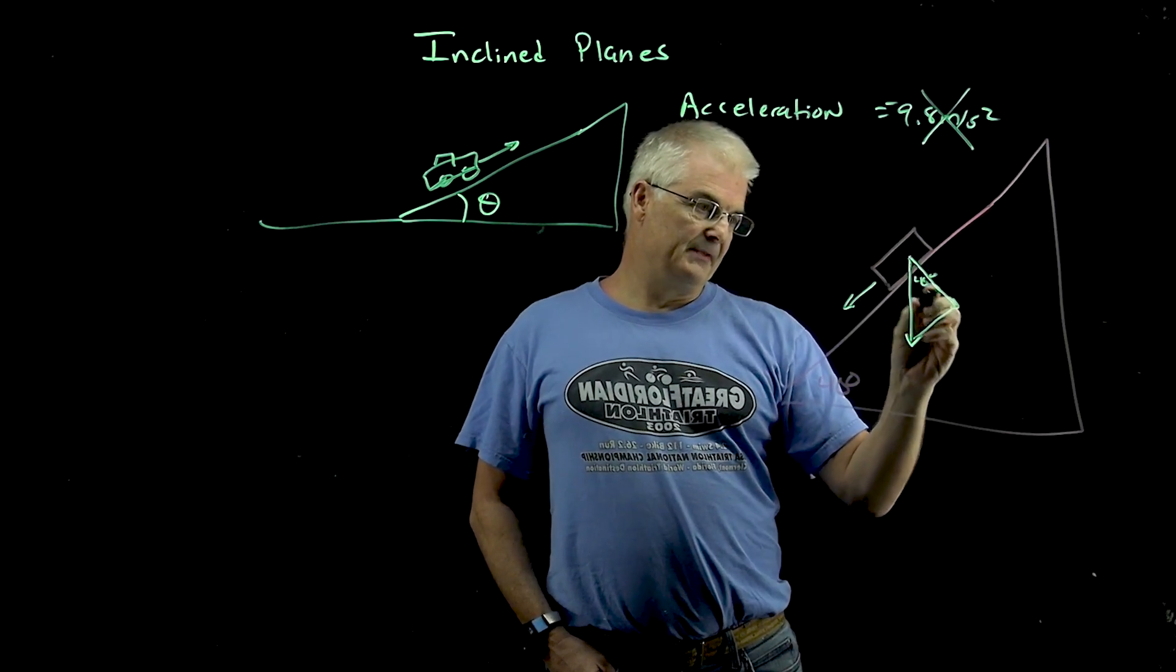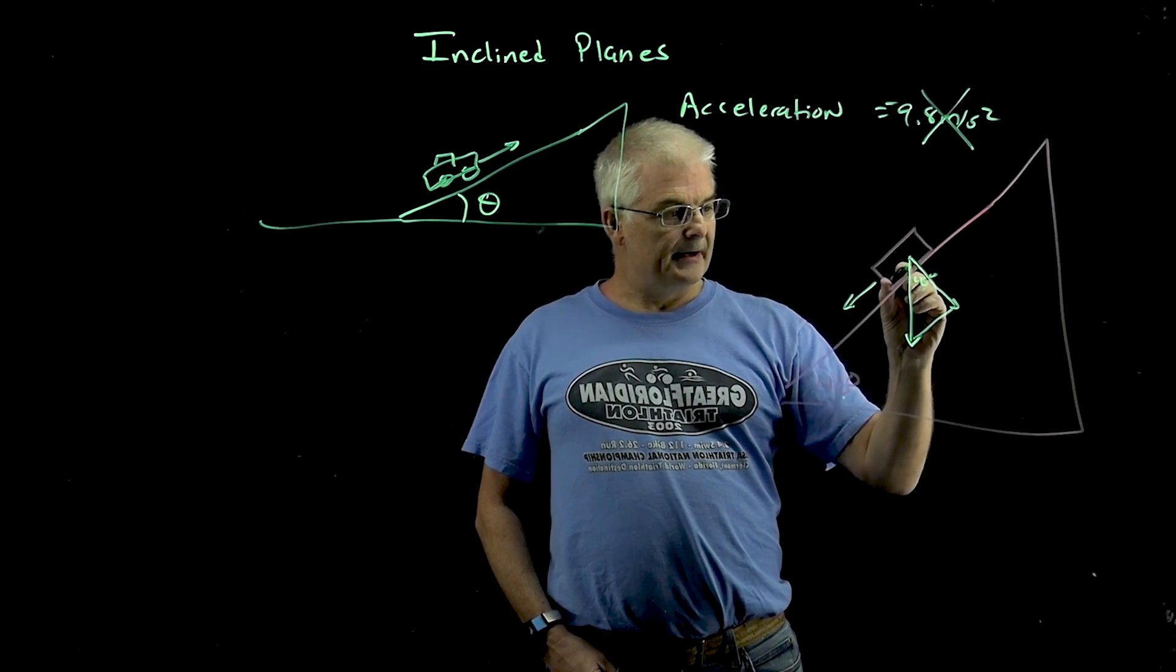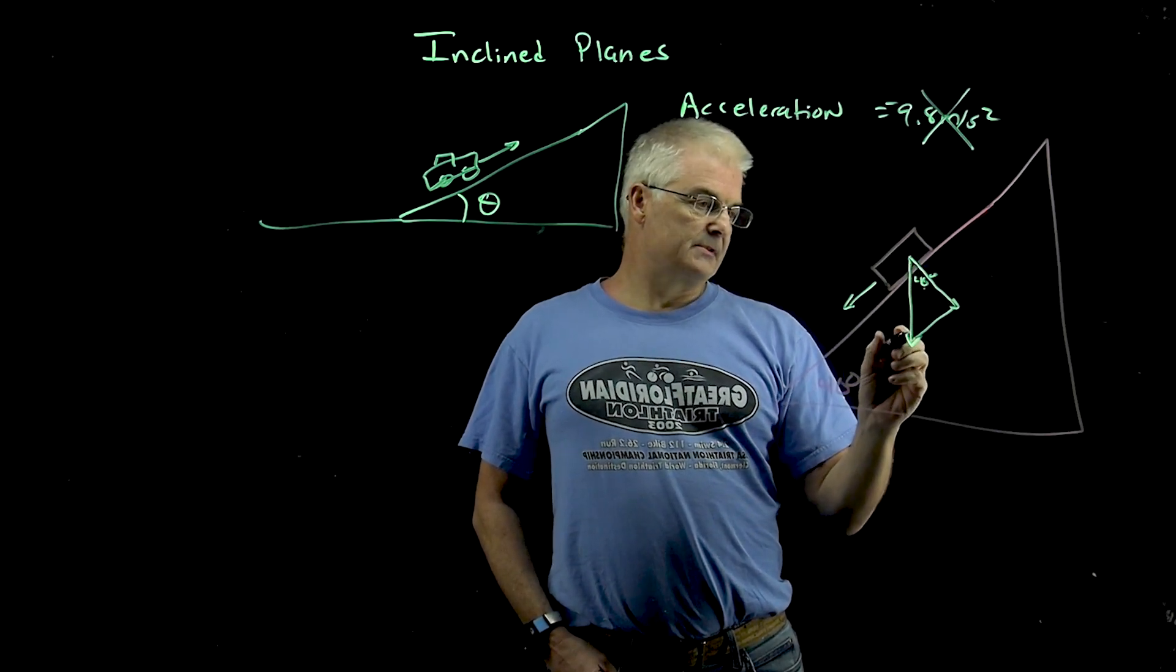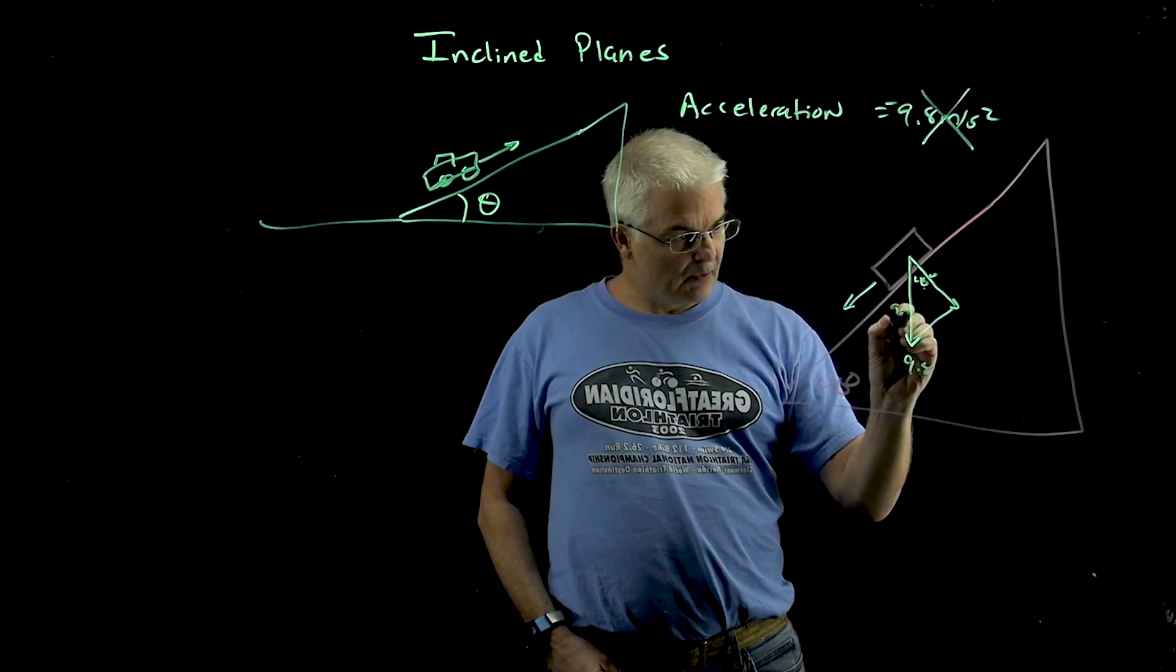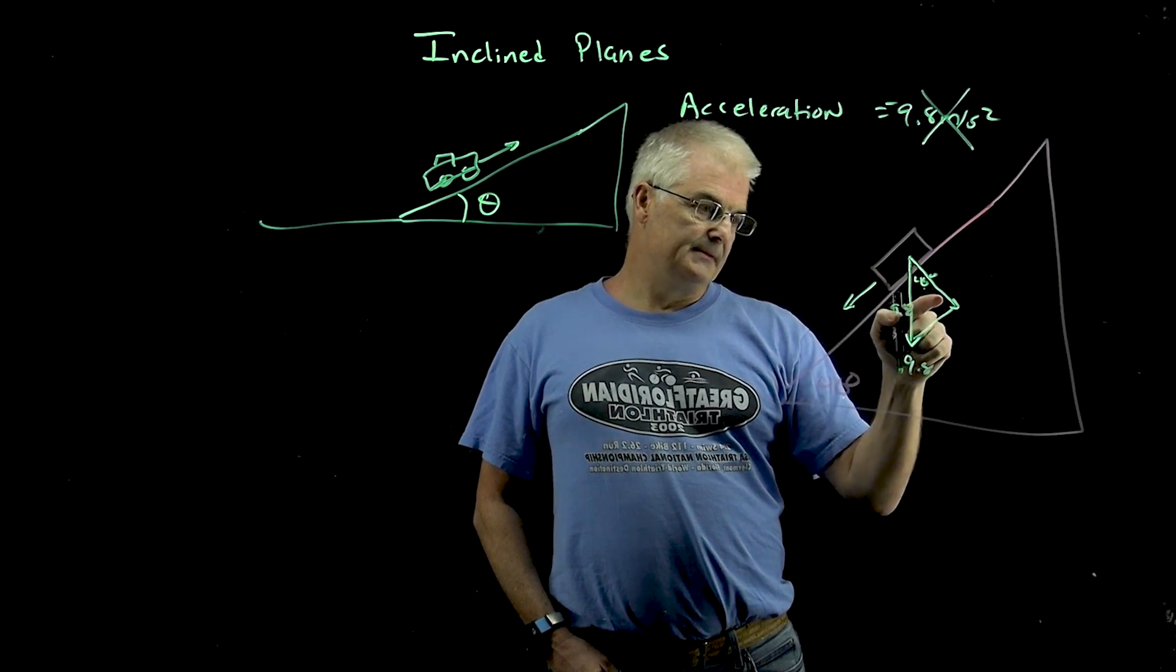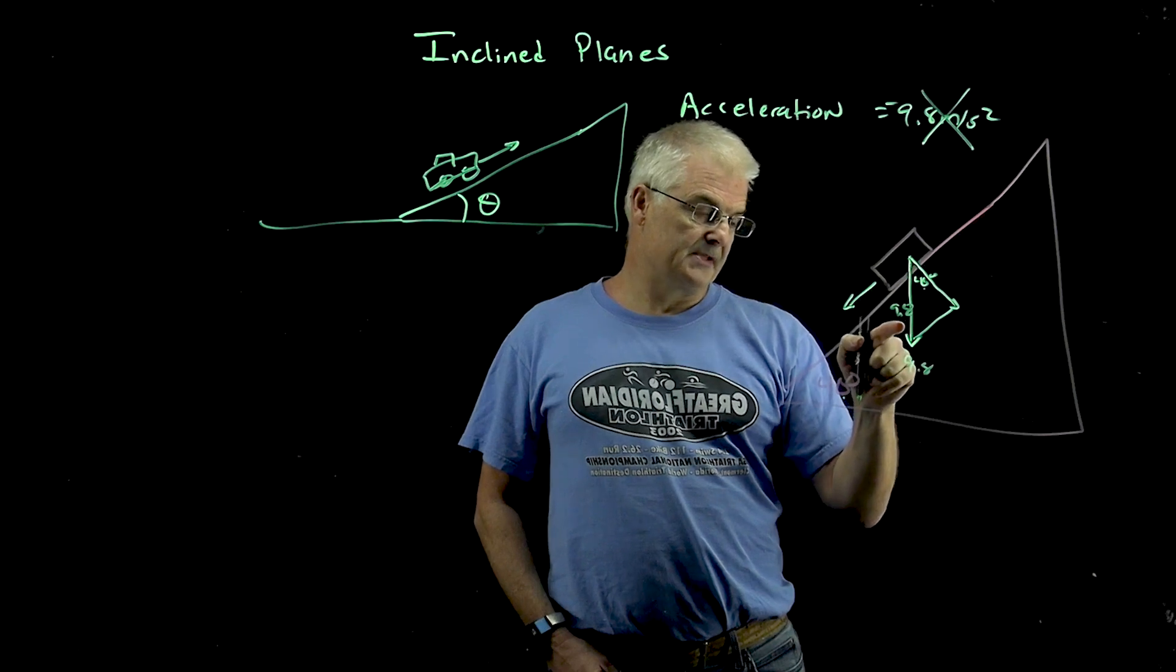But if you think about this, if this is 40 degrees, and if we know what... The downward is 9.8. So this is 9.8. And so if this is the... And 9.8 is the hypotenuse of this triangle. That's the hypotenuse.